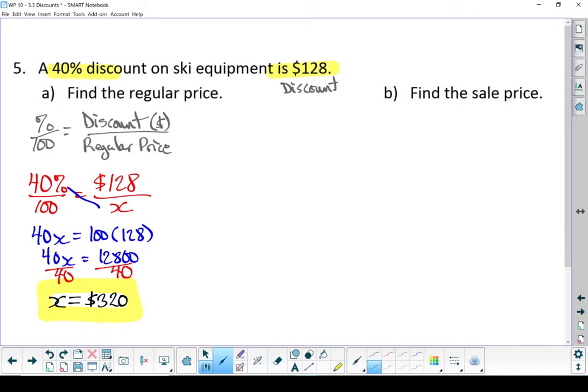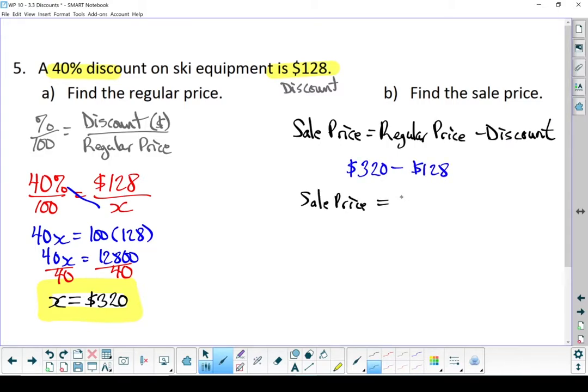All right, let's find the sale price. That one's pretty straightforward. Sale price is the original price minus the discount. And our sale price is $192.